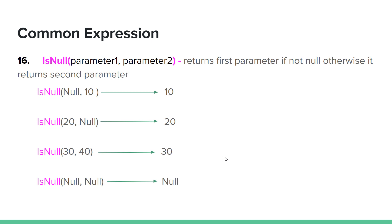ISNULL takes parameter 1 and parameter 2. It returns the first parameter if not null; otherwise, it returns the second parameter. For example, ISNULL of null returns the second parameter value, such as 20.